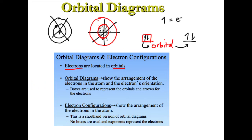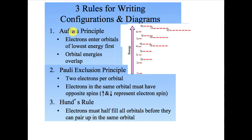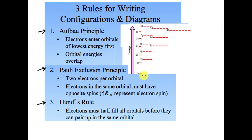To draw orbital diagrams, we first need to understand some rules. Here are three rules for writing electron configurations and orbital diagrams. These three rules need to be followed whenever we are writing configurations and orbital diagrams. The first one is referred to as the Aufbau principle, which means electrons fill lowest energy levels first. Once those energy levels are filled, it goes to the next one. Energy levels are broken up into sub-levels.